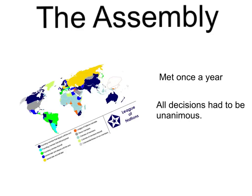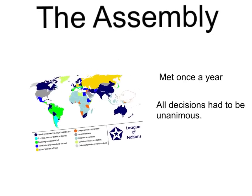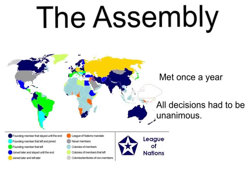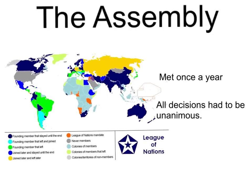One of the issues the Assembly had is all of its decisions had to be unanimous. Unanimous simply means everybody agreeing. But when you've got that many countries involved, unanimous decisions is going to be quite tough. So it seems likely that the Assembly would never really come to any useful conclusions.